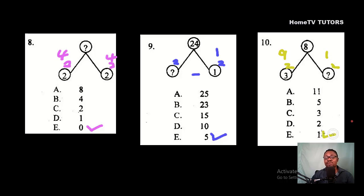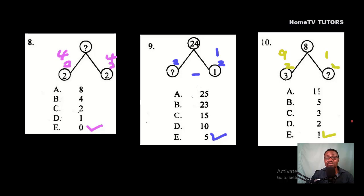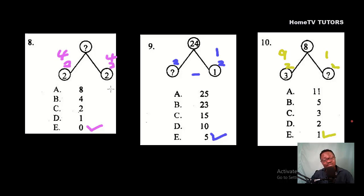For question 10: the square of 3 is 9. Nine minus something equals 8, so that something is 1. The square root of 1 is 1 — answer option E. Notice that questions 8, 9, and 10 all have answer E. Don't let that throw you off if you're guessing — when you've solved it yourself, you know your answer is correct regardless. Thank you for watching, subscribe, and share the video.